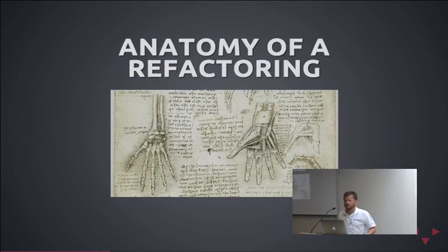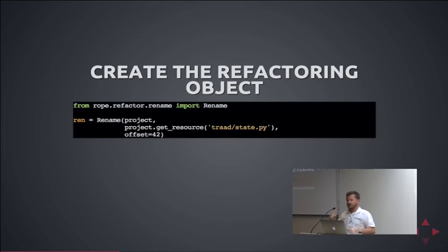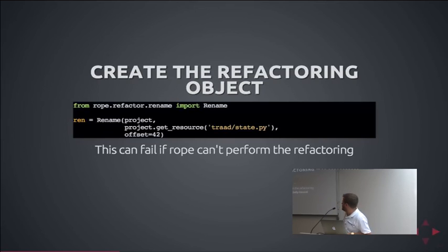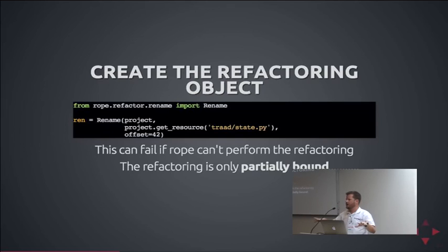So you have projects, resources, and so forth — but what does it actually look like to do a refactoring with Rope? The first thing you do is create a rename refactoring: import the rename refactoring class and construct one, passing the project, the resource — in this case a file called state.py — and the offset at which you want to do the rename. This can fail if the resource doesn't exist or you've gone off the end of the file. What's conspicuously missing is what you want to rename it to, so this is a partially bound, incomplete refactoring — it's figured out all the places it has to touch, and you can reuse the same refactoring object multiple times.